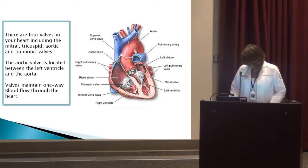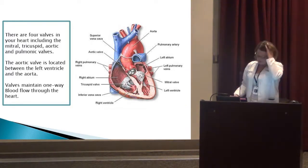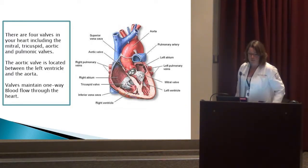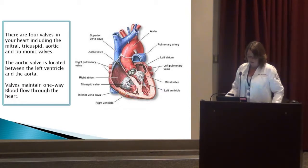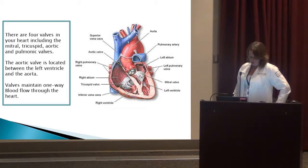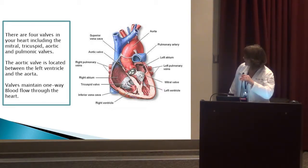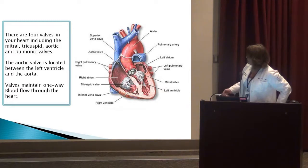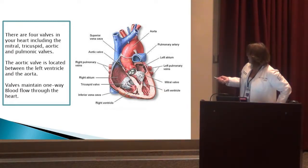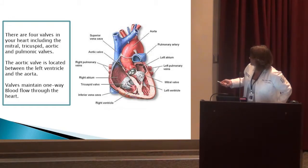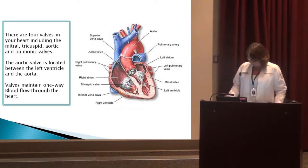Aortic stenosis is a disease that we deal with all the time with a lot of our patients. Going back to the basics, there are four valves in the heart: the mitral, tricuspid, aortic, and pulmonic valves. The aortic valve is located between the left ventricle and the aorta, and valves maintain a one-way blood flow through the heart.